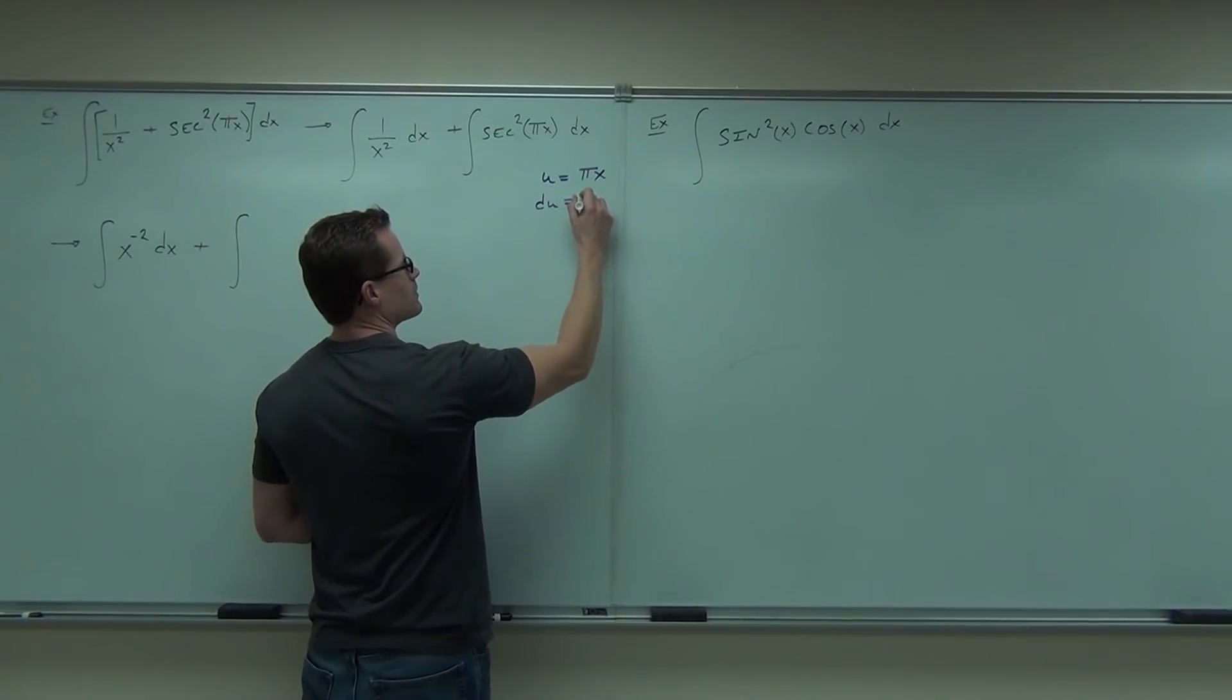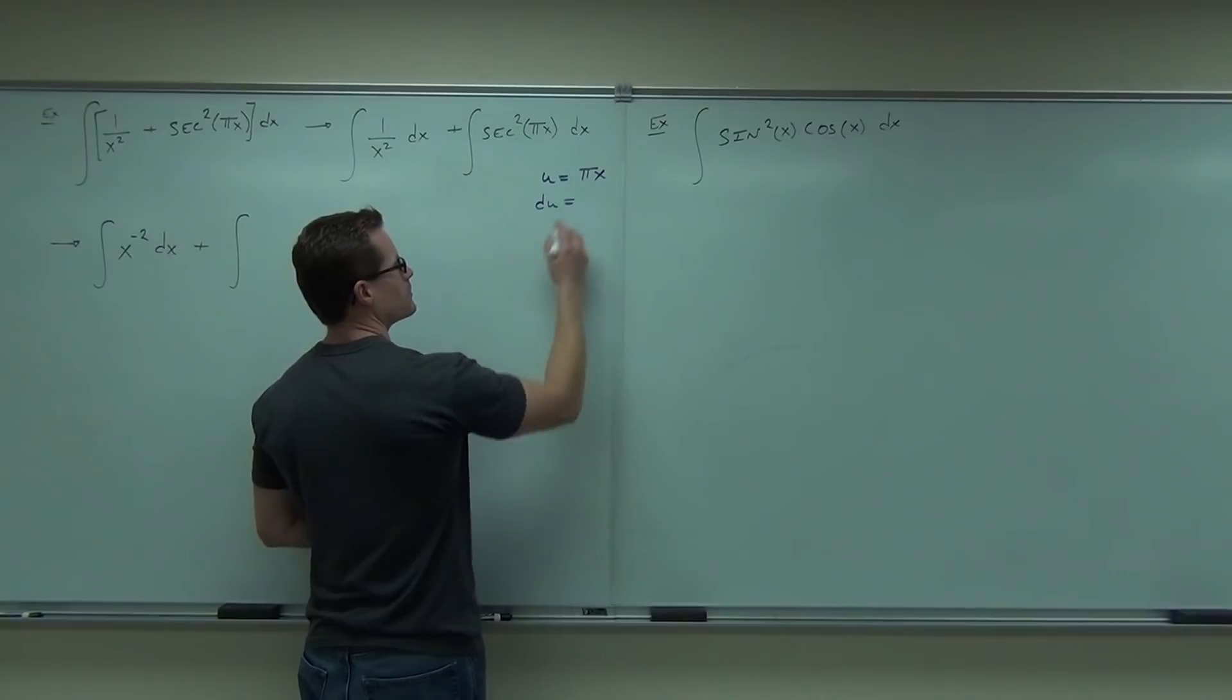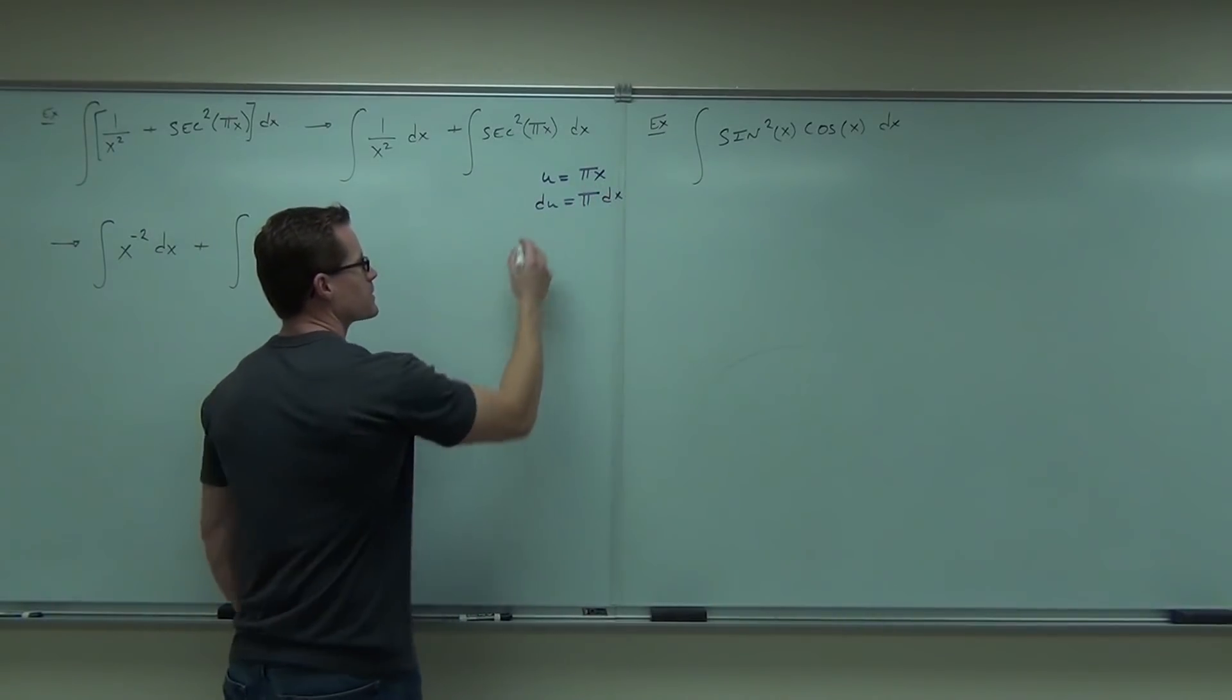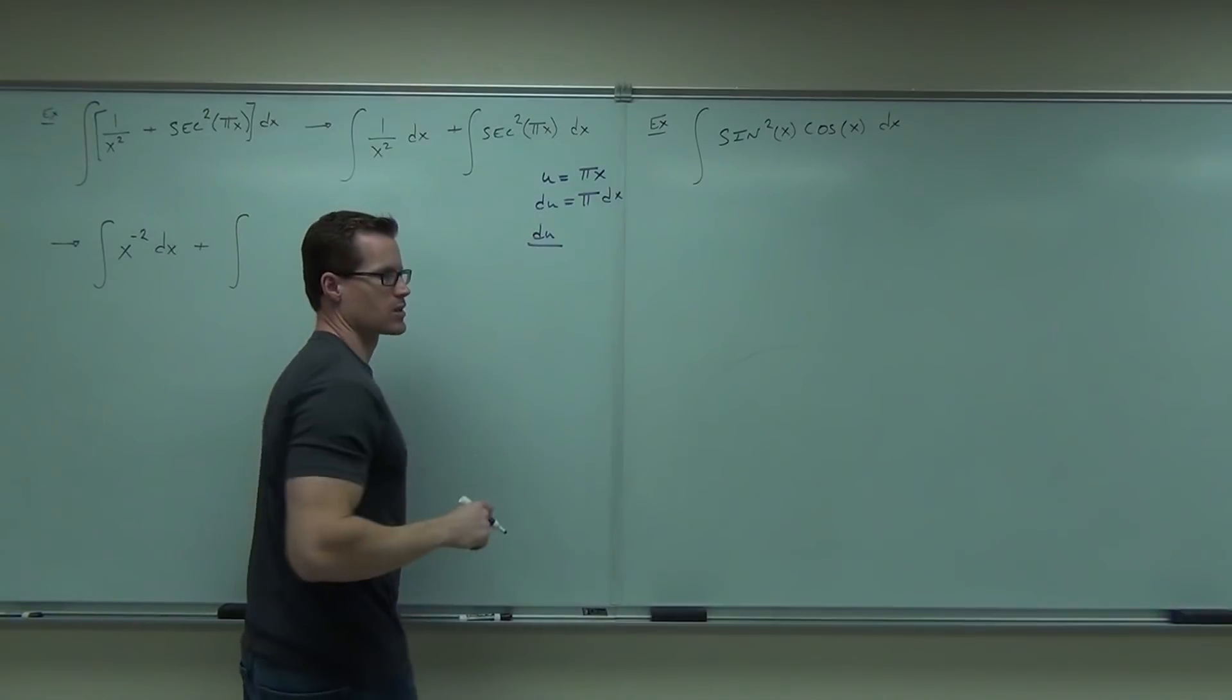du in this case is pi dx. Oh remember, pi is a constant, right? So if it was 3x, it'd be 3.